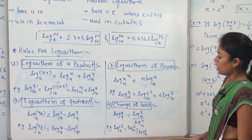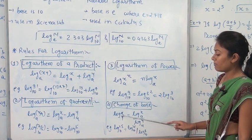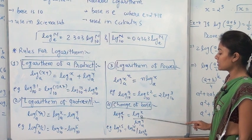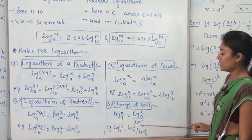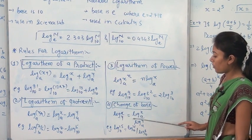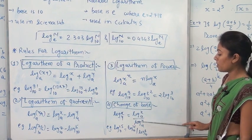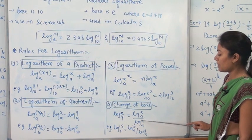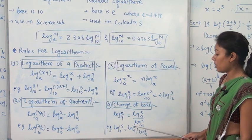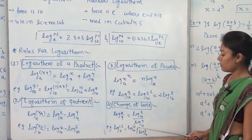The fourth rule is the change of base rule. In this rule, we change the base of a logarithm. Suppose we have numbers x and y; then logarithm of x base y equals log x base A upon log y base A. In the LHS the base is y, but in the RHS the base is A. For example, log 15 base 7 can be written as log 15 base 10 upon log 7 base 10, where the base is the same in both the numerator and denominator.